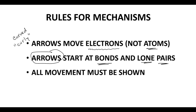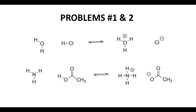All right, so those are the ground rules. Let's look at the problems. Here are our first two problems. In this problem, here are our starting materials on the left, and then over to the right, what we have is this new OH bond, and our chlorine is now chloride — it's lost its bond. So we need to account for the formation of this bond and the breaking of our HCl bond.